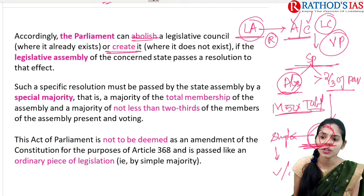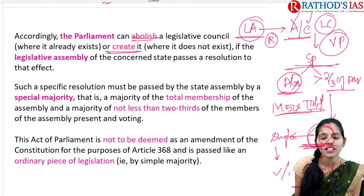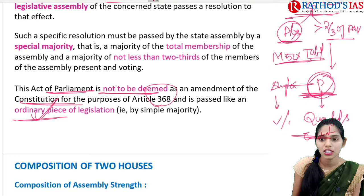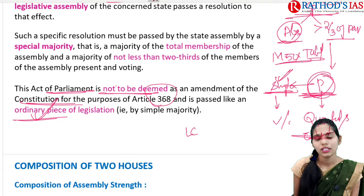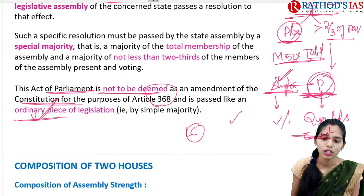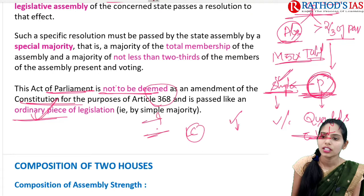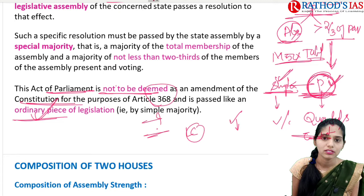Because of this, we can say we have a quasi-federal state with a unitary tilt. One thing you should remember: whenever this type of Act is done by Parliament, it is not to be deemed as an amendment to the Constitution according to Article 368. It should be passed like an ordinary piece of legislation — that is, with a simple majority. Parliament is not bound to act on the resolution, which is why we call this a quasi-federal system with a unitary tilt.